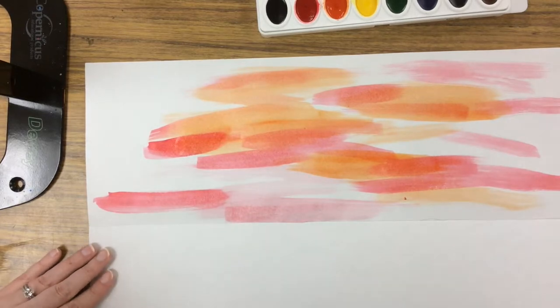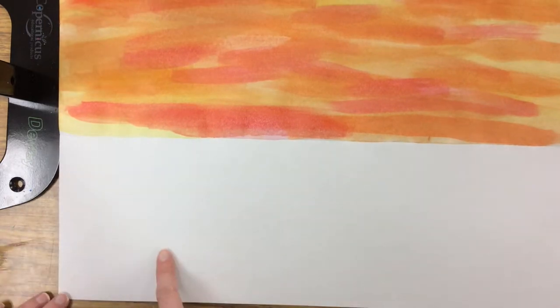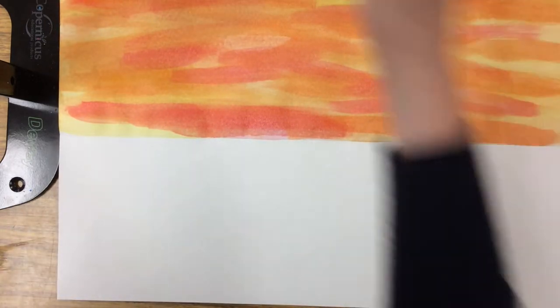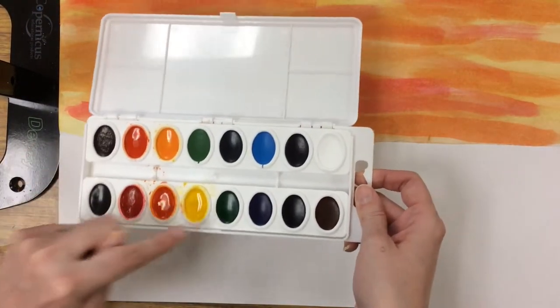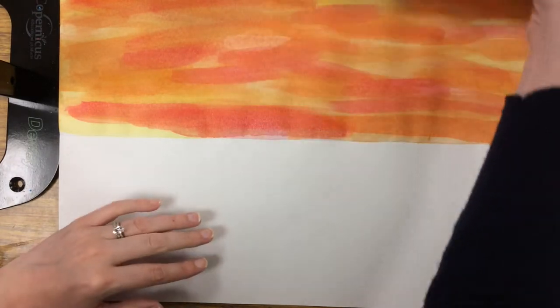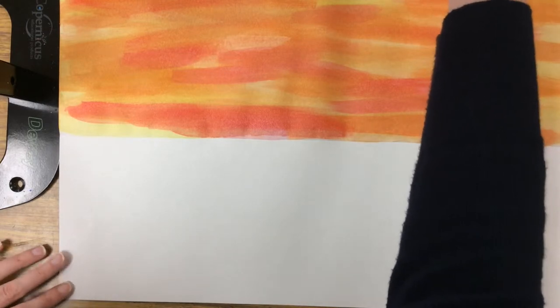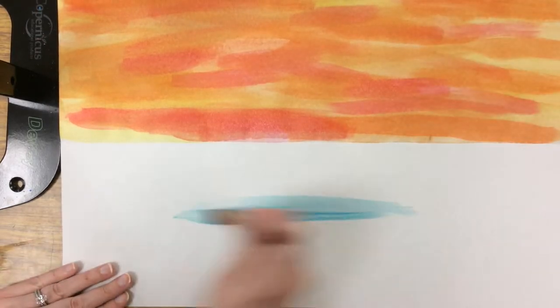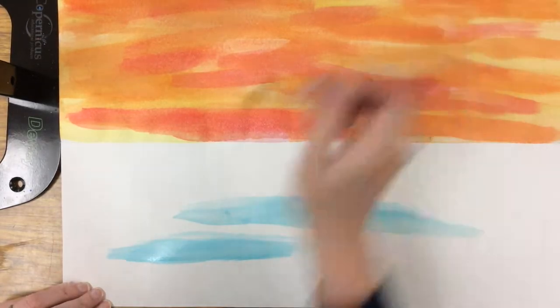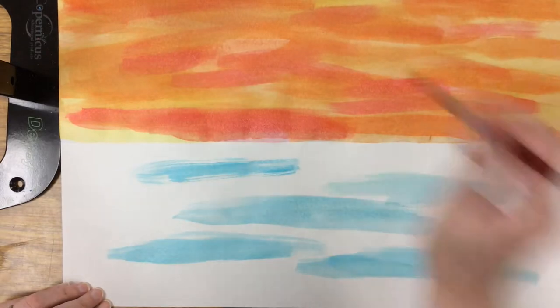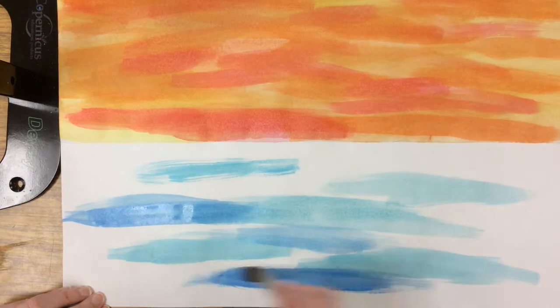Let's skip ahead. Now that my sky is all painted, I'm going to do the same thing on the bottom with cool colors for my water. Notice I'm cleaning my brush really well in between colors so that my paint stays nice and clean for me and for my friends that are sharing my paint with me. I'm going to start with blue here and then I can use a little bit of green and purple, blend them all together with horizontal brush strokes.